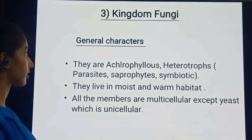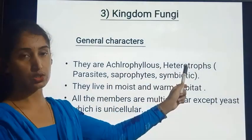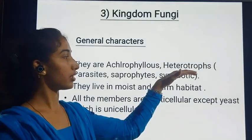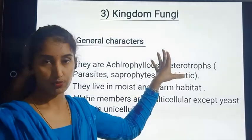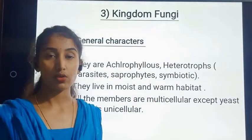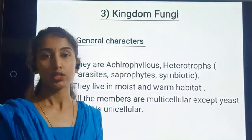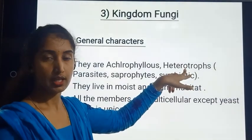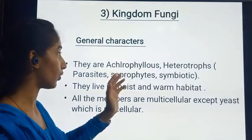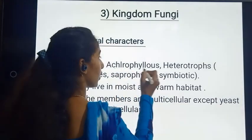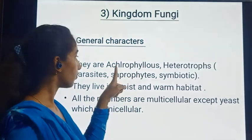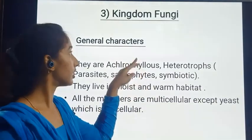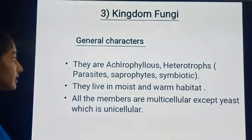The first general characteristic is that fungi are achlorophyllous heterotrophs. Heterotrophs means these fungi members depend on other organisms or substances to derive their nutrition. They are not able to produce their own food because they do not possess the chlorophyll pigment — that is why we use the term achlorophyllous, meaning chlorophyll is absent in the members of fungi.